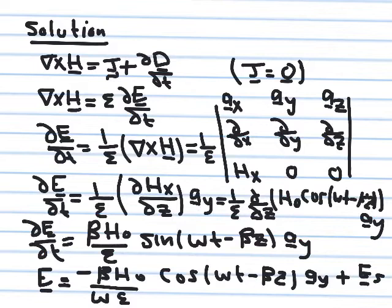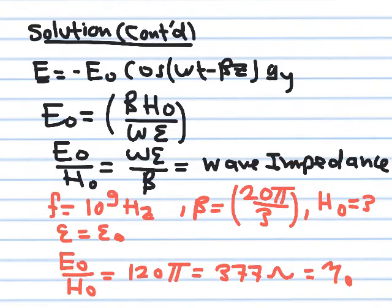The static field E_static, if it existed, would not travel and would not be correlated to the given magnetic field. Since we are discussing a traveling wave where the fields are coupled, this static term must be set to zero. Therefore, the electric field is simply E = −E₀ cos(ωt − βz) ŷ, where E₀ = β·H₀/(ε·ω) is the amplitude of the electric field.